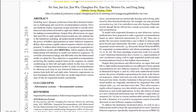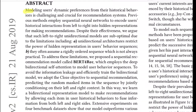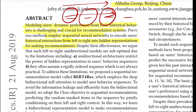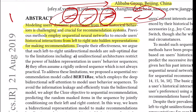From the abstract: modeling users' dynamic preferences from historical behavior is challenging and crucial for recommender systems. Previous methods employed sequential neural networks to encode users' historical interactions from left to right into hidden representations for making recommendations — similar to how LSTMs predict the next word given previous context.